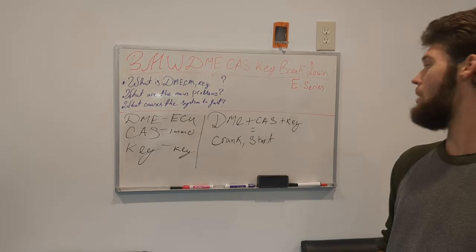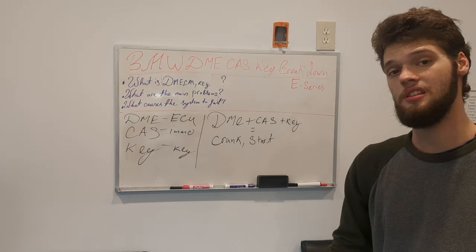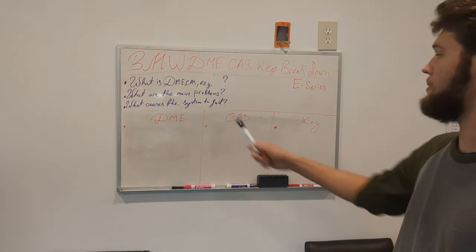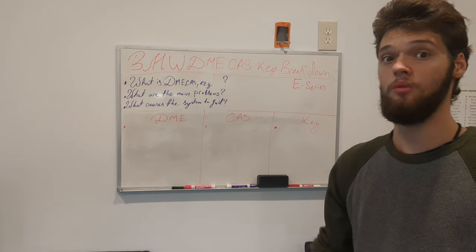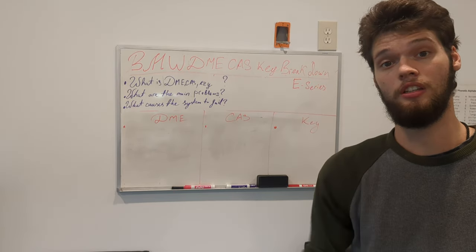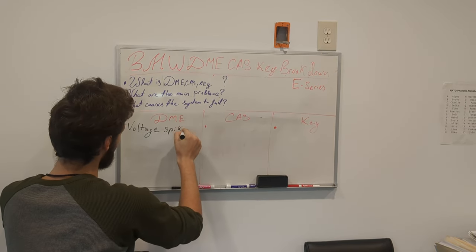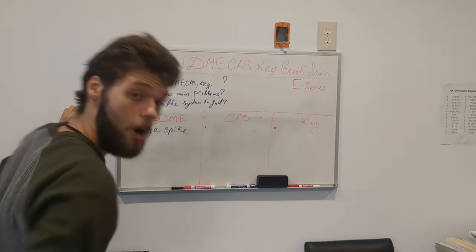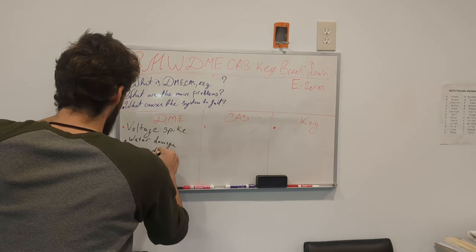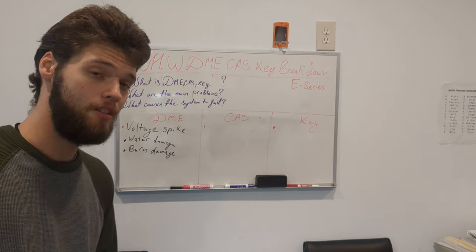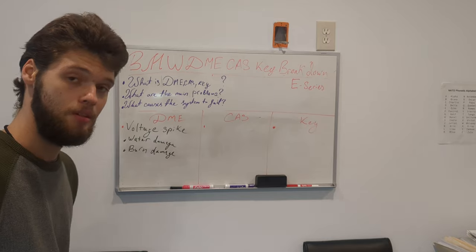Now, we'll go over what are the main problems in these modules, and what causes the system to fail. We'll start it off with the main problems in the DME. The main problems that we have in the DME, primarily when the DME is not working, is because of the voltage. So, voltage spike. After the voltage spike, we got the water damage. Burn damage. That, to be honest with you, that's about it. This is, as far as you need to know, the basics of the DME system, what causes it to fail.